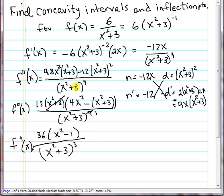Now we're going to be needing to solve the second derivative equal to zero, so we need to simplify this. So I GCF factored the top. We have a 12 in common, and x squared plus 3 to the first power.